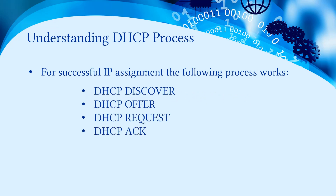For a successful IP assignment process, four background processes must be successfully completed: DHCP Discover, DHCP Offer, DHCP Request, and DHCP Acknowledgement. For any successful IP assignment, this process should be fully completed.